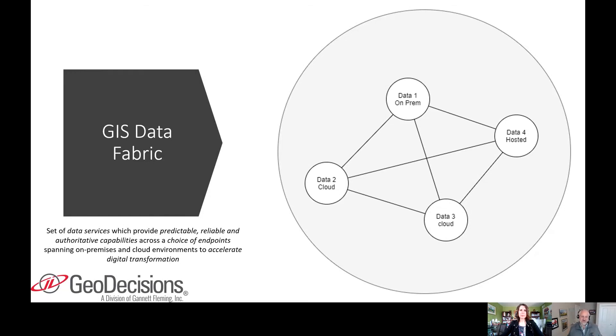It's a set of data services which provide predictable, reliable, and authoritative capabilities across a choice of endpoints spanning on-premise and cloud environments to accelerate digital transformation. It's a lot of words, so let's break down what a GIS data fabric is.